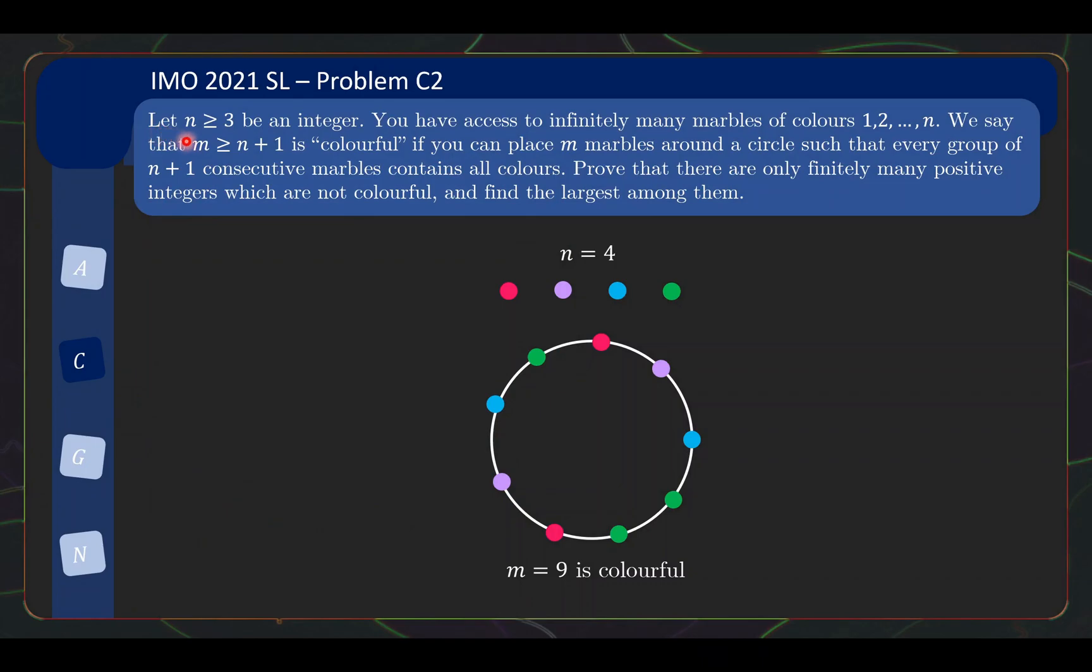So here we have n greater than or equal to 3 be an integer. You have access to infinitely many marbles of colors 1 to n. We say that m greater than or equal to n plus 1 is colorful if you can place m marbles around a circle such that every group of n plus 1 consecutive marbles contains all colors. So let's pause here for a while to digest the previous statement. So over here we have n equals to 4 colors as an illustration.